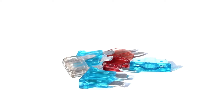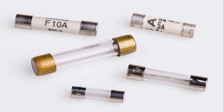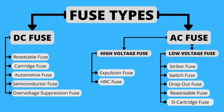In today's video we talk about fuse types. There are over 15 types of electrical fuses differentiated by working principles, construction, and applications. Most of them are categorized by type of protection — they are DC fuses and AC fuses. Let's see one by one.